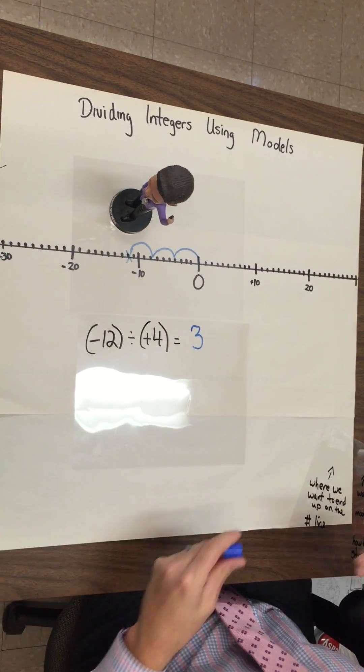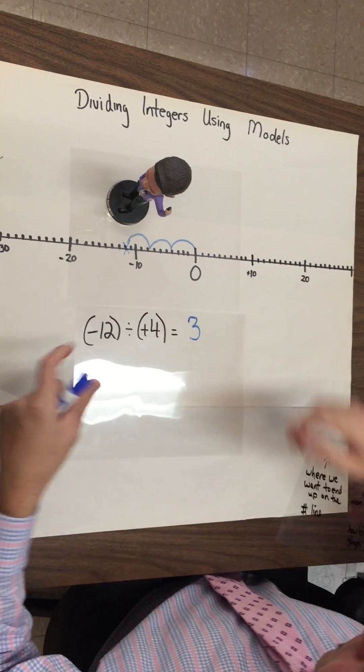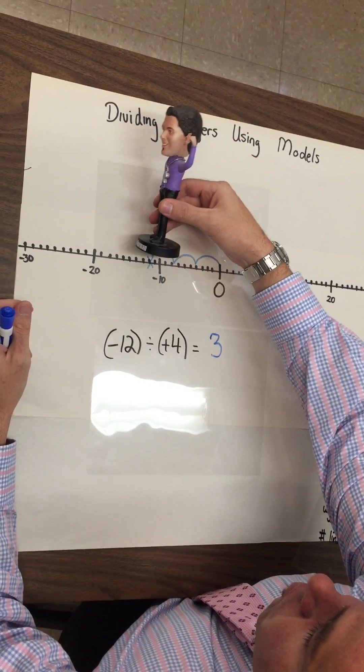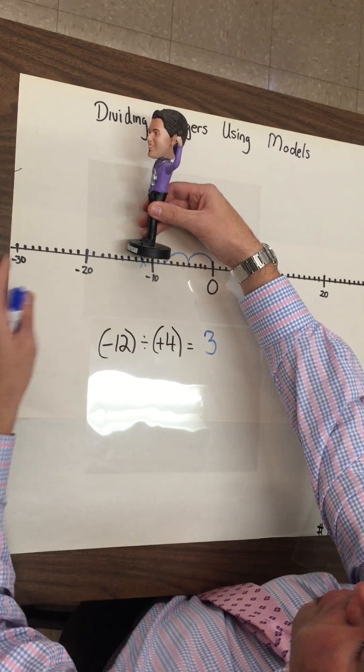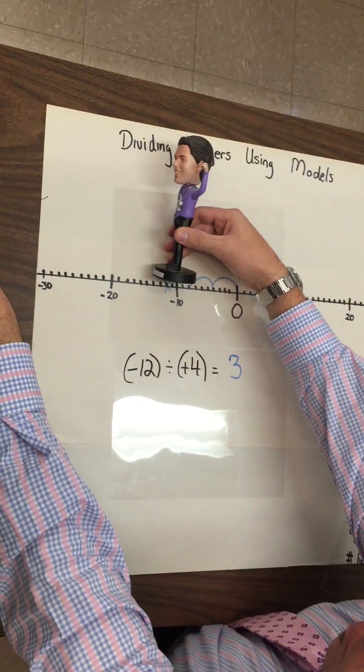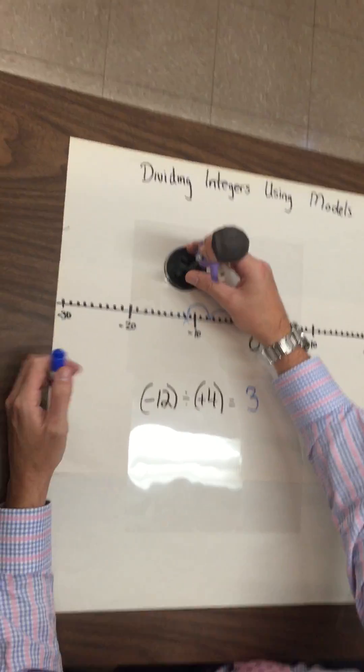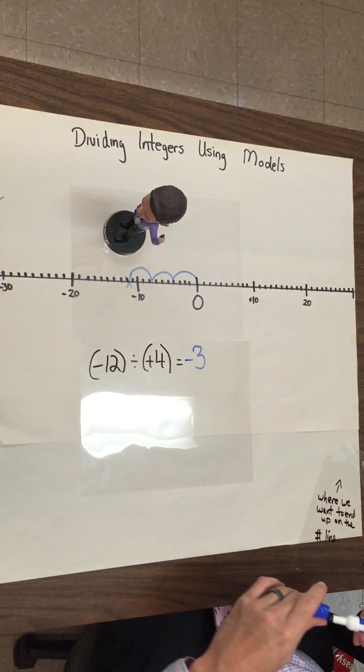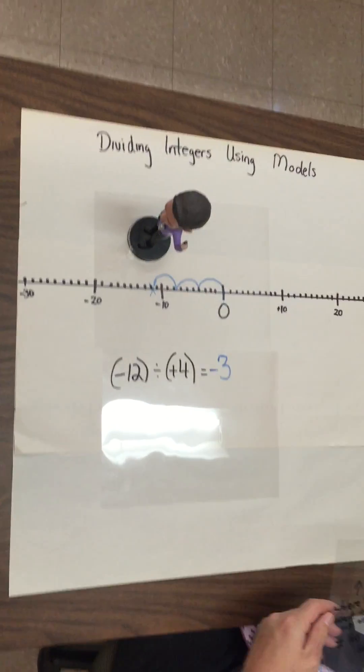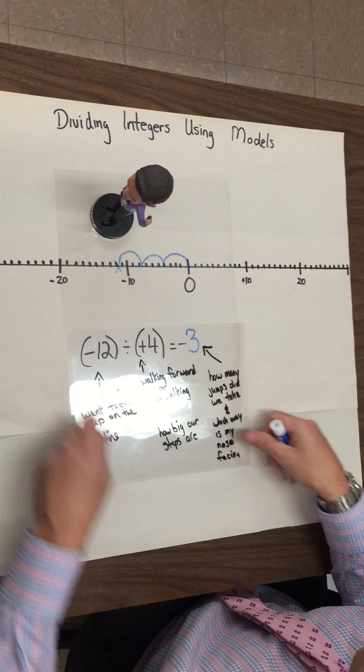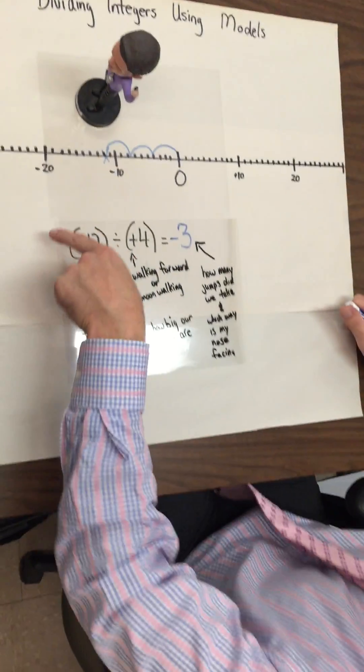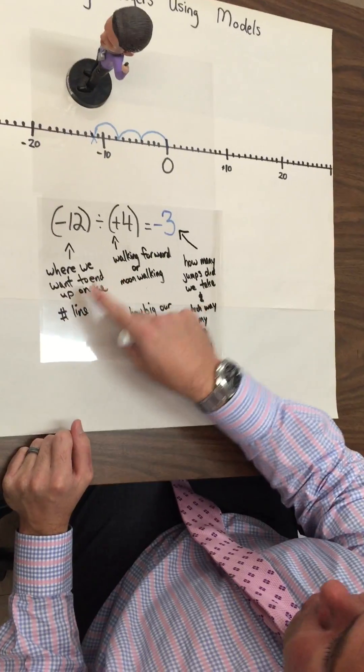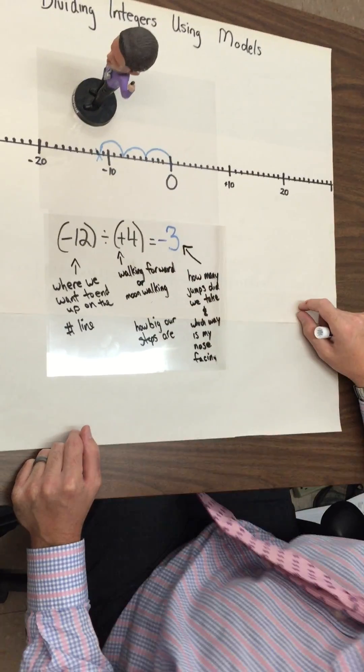Now here's the part you've got to wrap your head around. This is the difficult part. Look at my mini-me. And which way is my nose pointing? It's pointing towards the negative end of the number line. So that means my answer is going to be negative. Let's take a look right here. So once again, let's review.